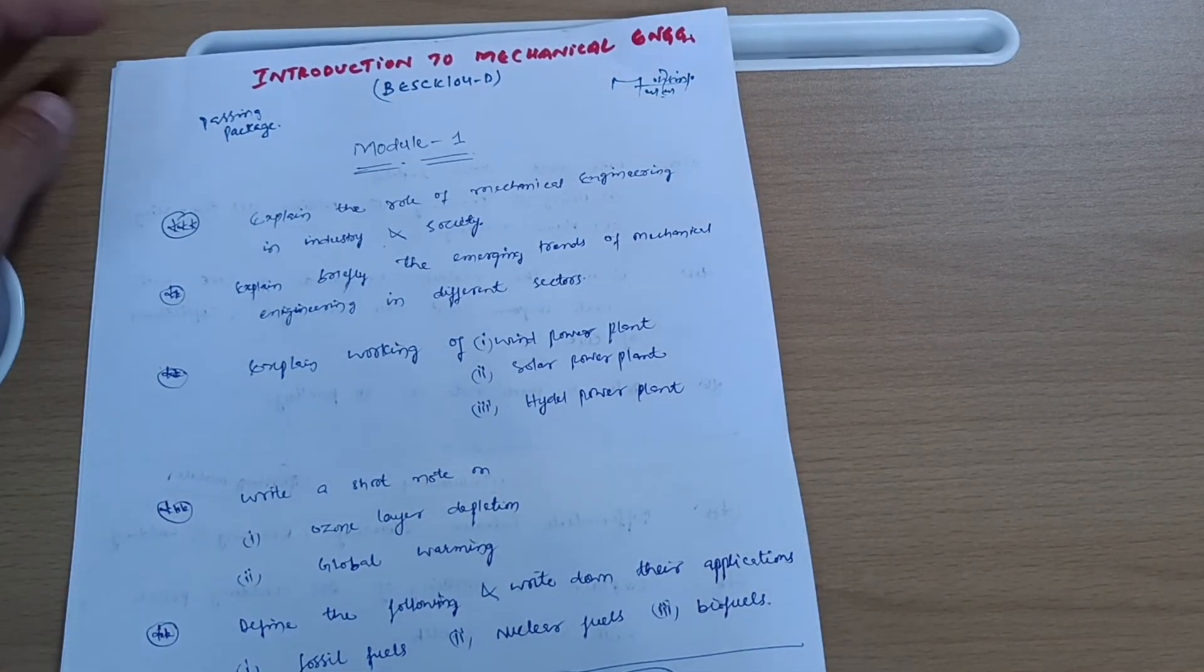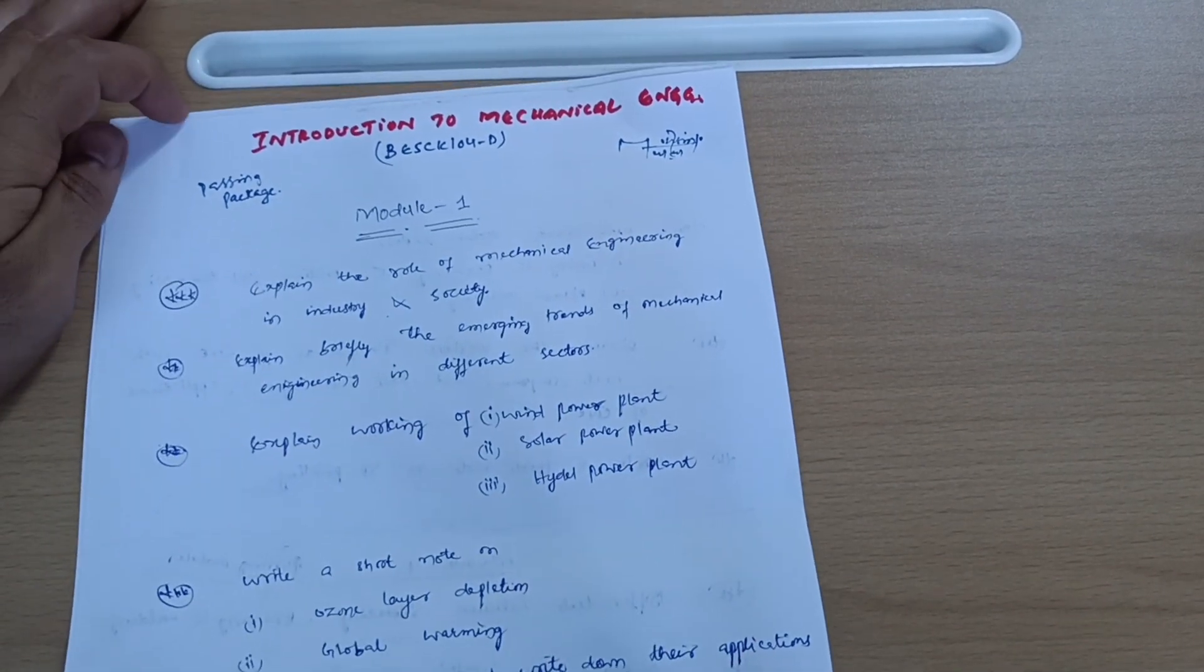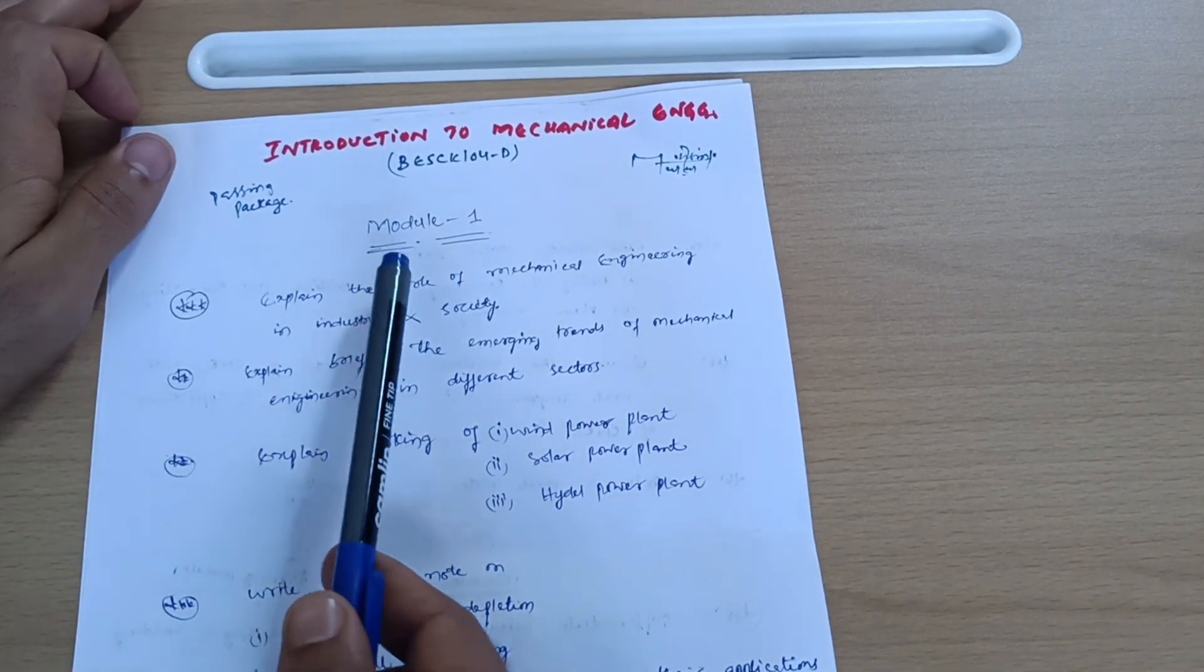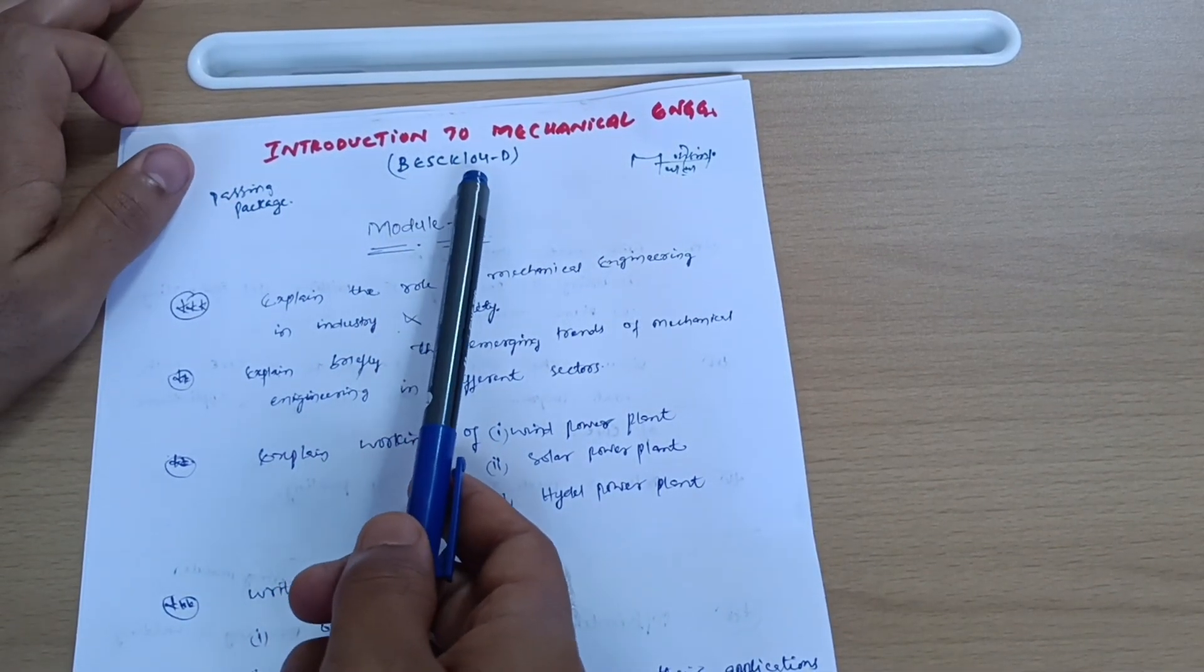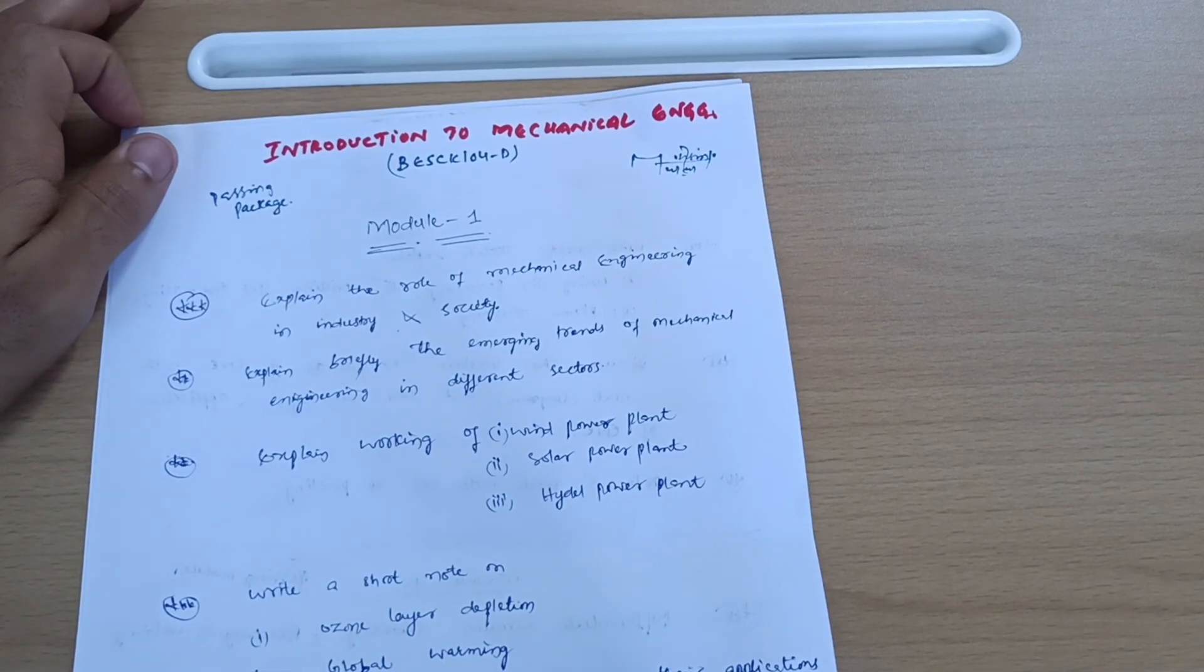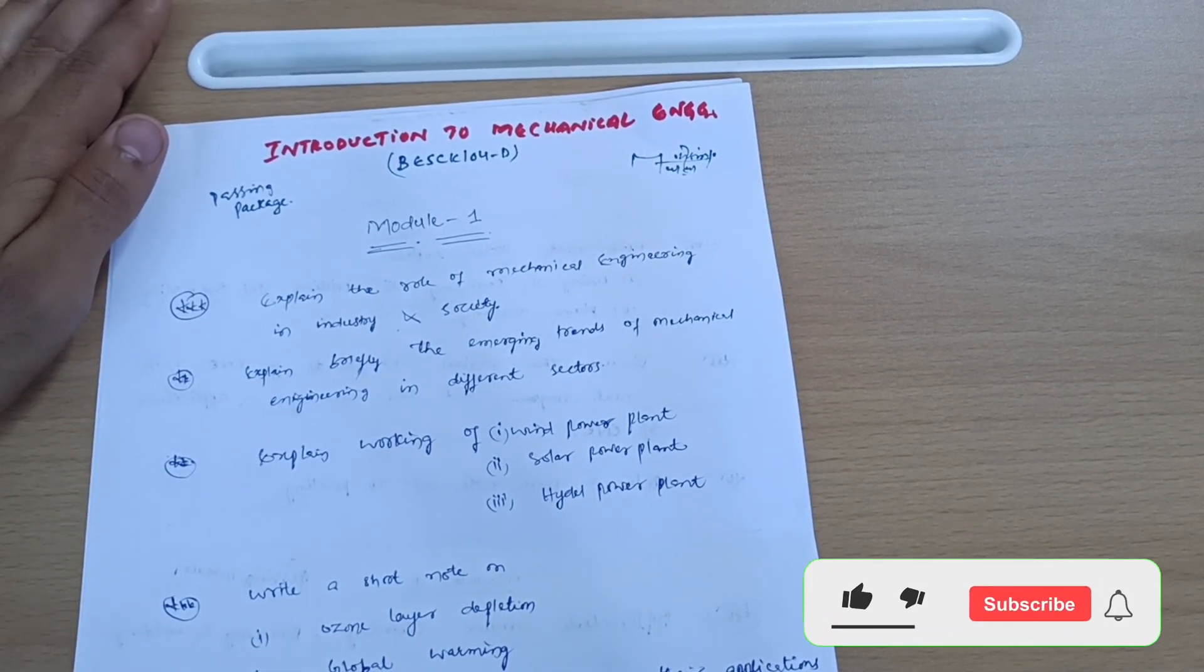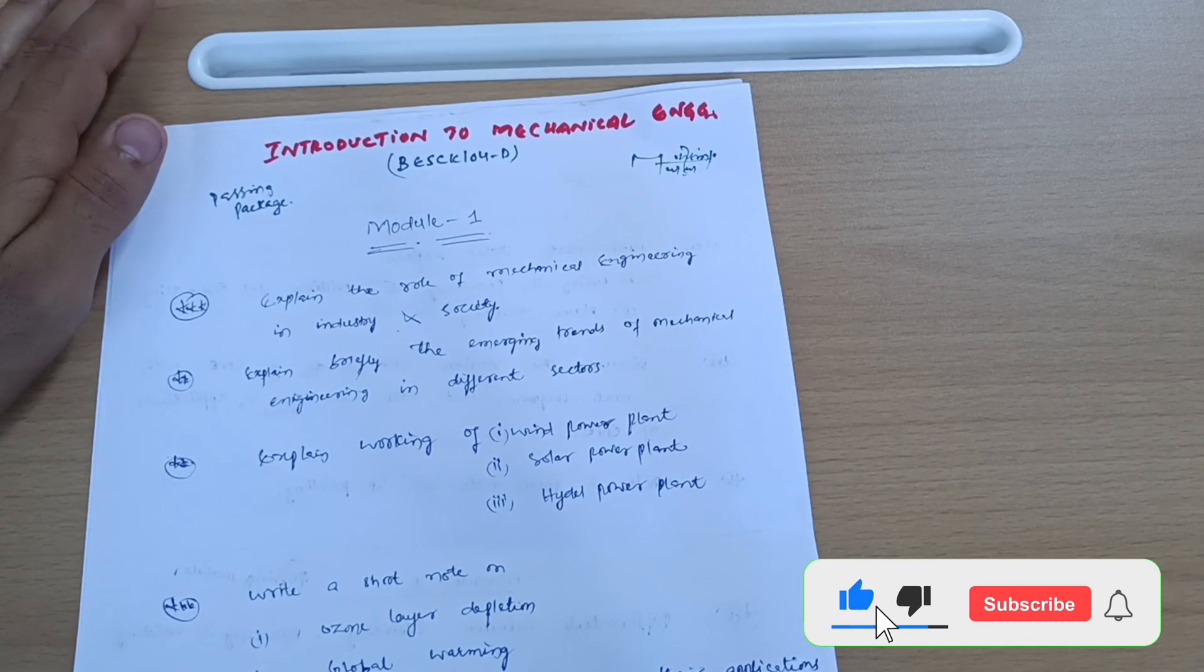Hello dear students, welcome back to my video. I will discuss the important questions and passing modules of Introduction to Mechanical Engineering subject. The subject code is BESCK 104d. This is a subject in which you can not only pass but also score well if you read the topics very well which I will mention in this particular video.